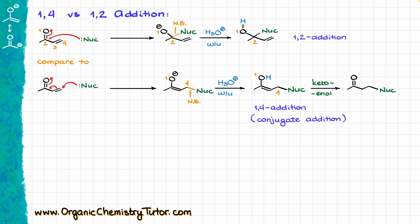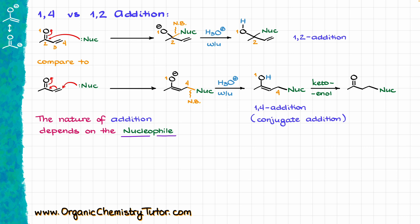And here is something really interesting. The nature of our addition — whether it's a 1,2-addition, direct addition, or the conjugate addition — depends on the nature of our nucleophile. The two terms you are going to be hearing when dealing with nucleophiles are hard nucleophiles and soft nucleophiles. While this classification does have its own flaws, we are still using it traditionally, so that is what you are most commonly going to be hearing within the scope of your course.